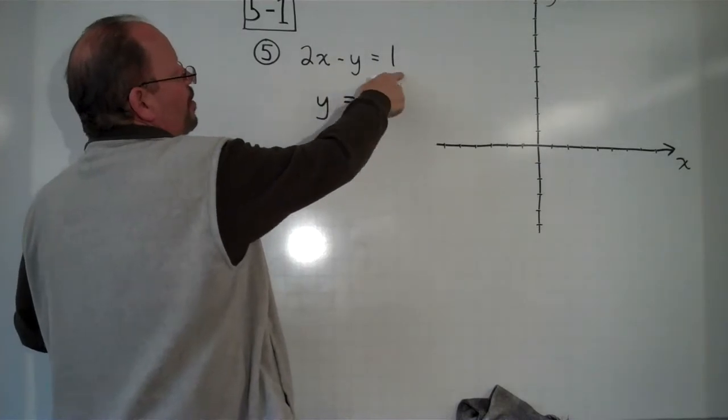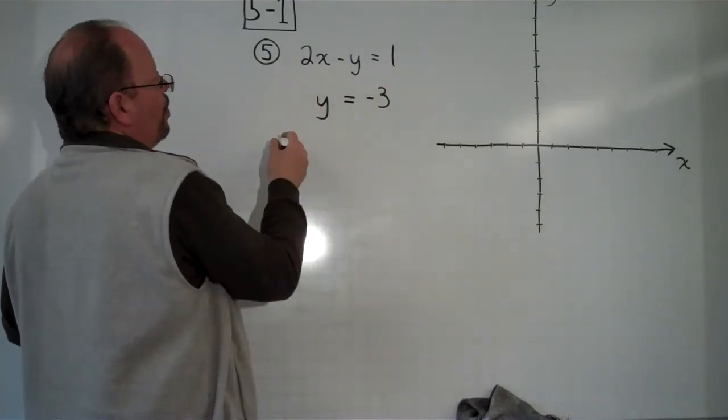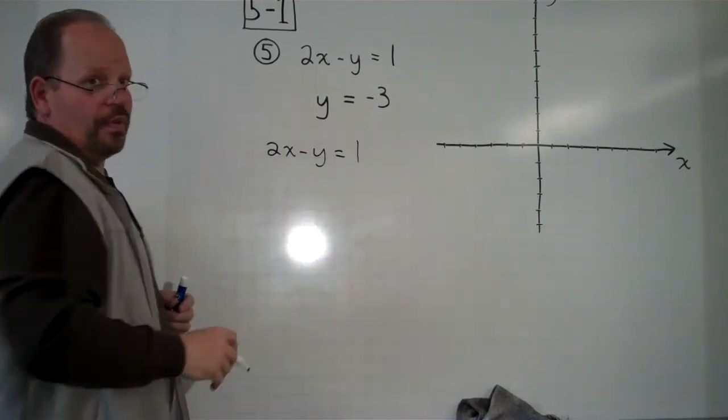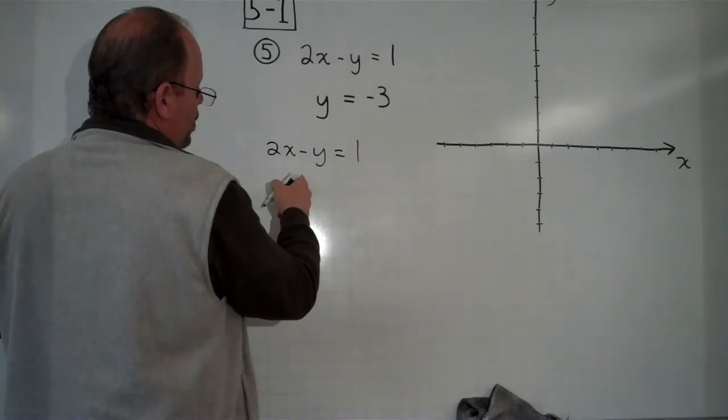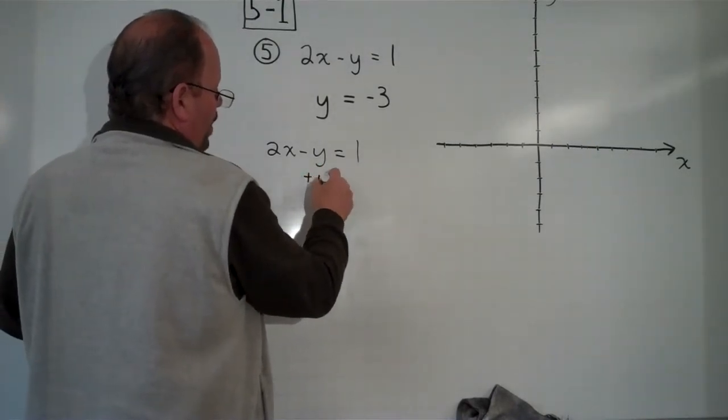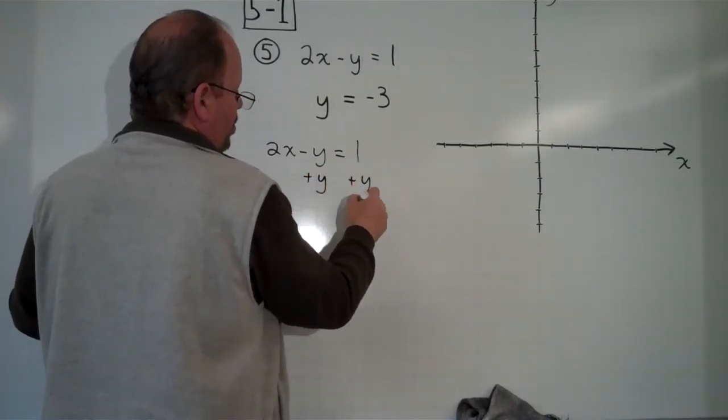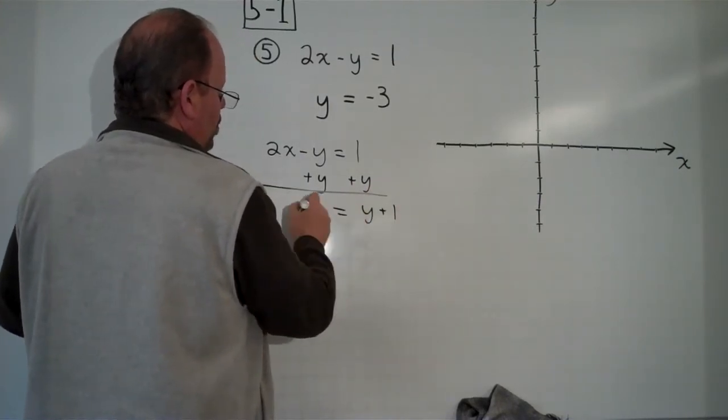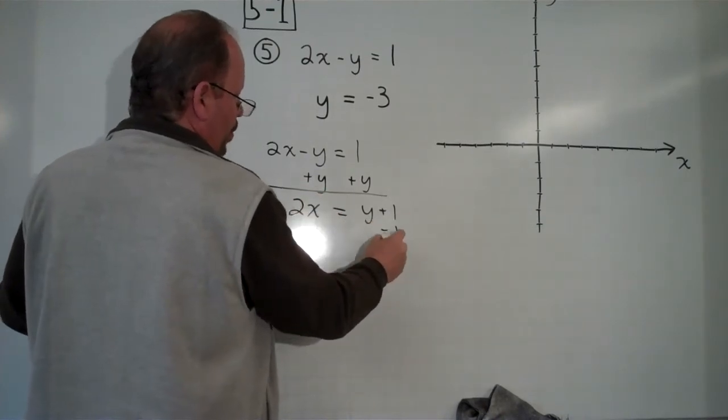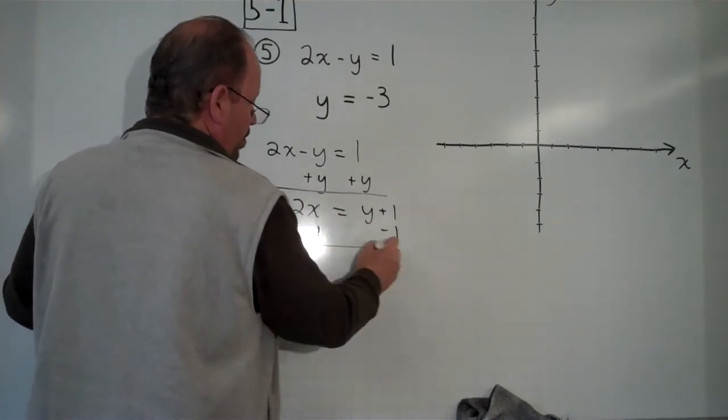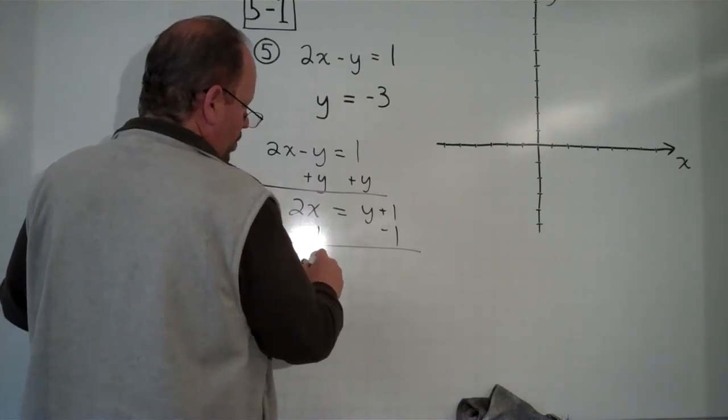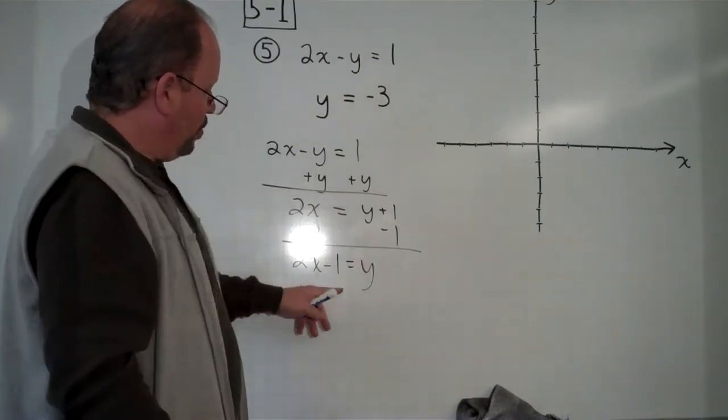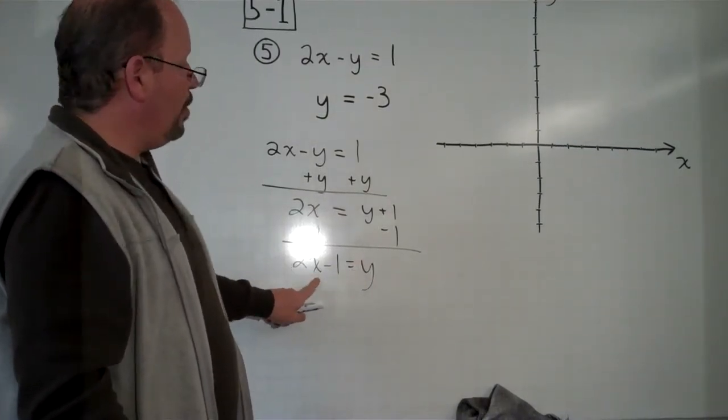And if we look, this isn't in slope-intercept form, but we can easily put it into slope-intercept form. Solving for y. We could add y to both sides. And then subtract 1 from both sides. And then we have the equation y equals 2x minus 1.